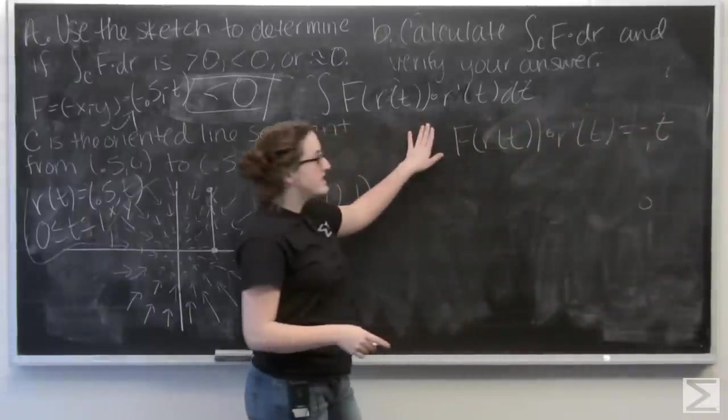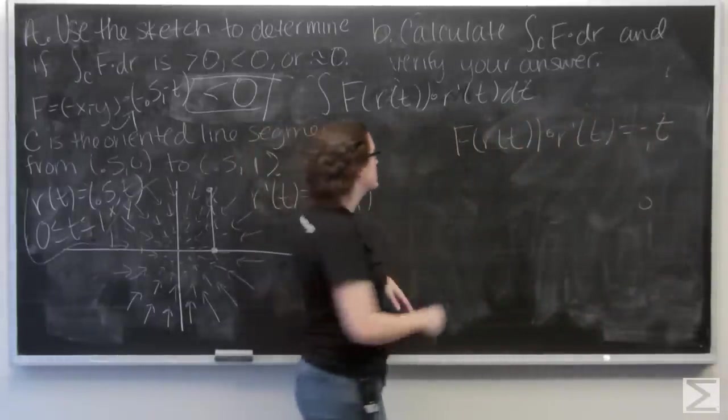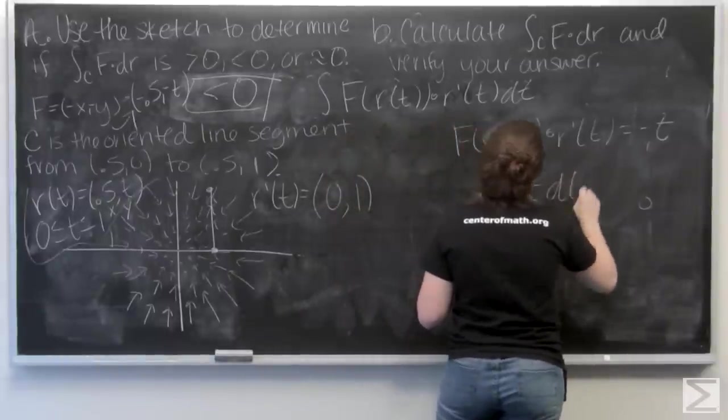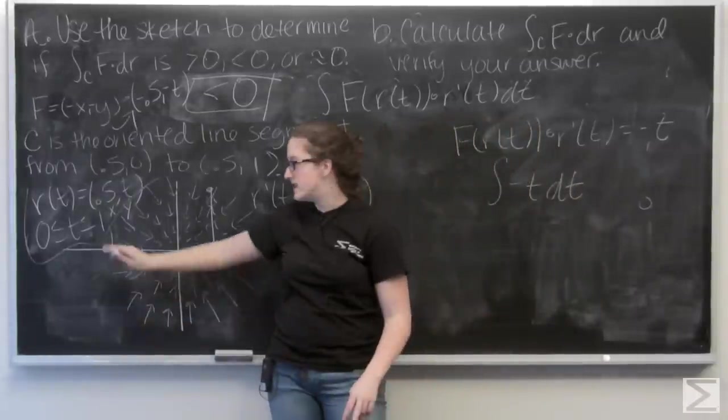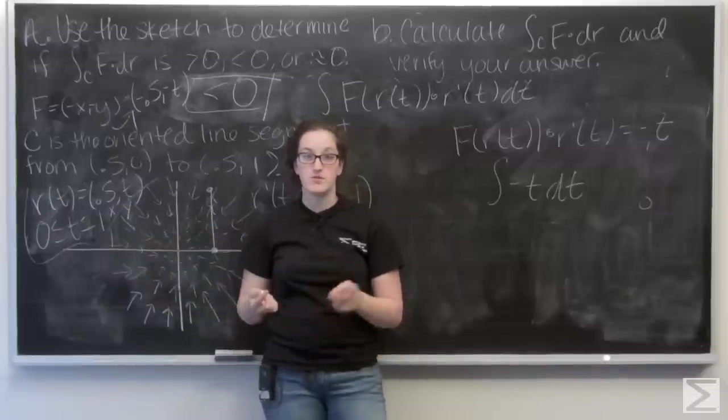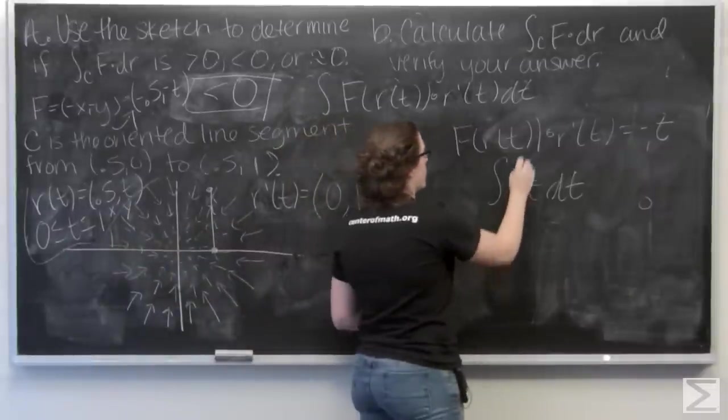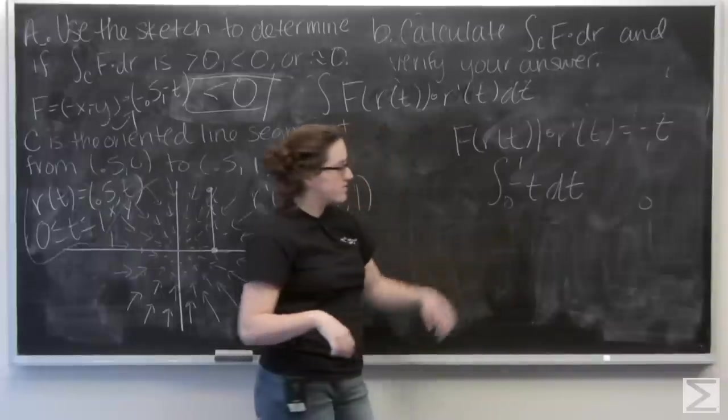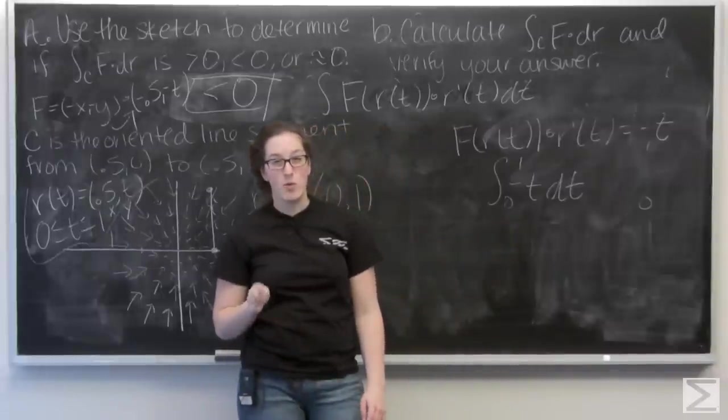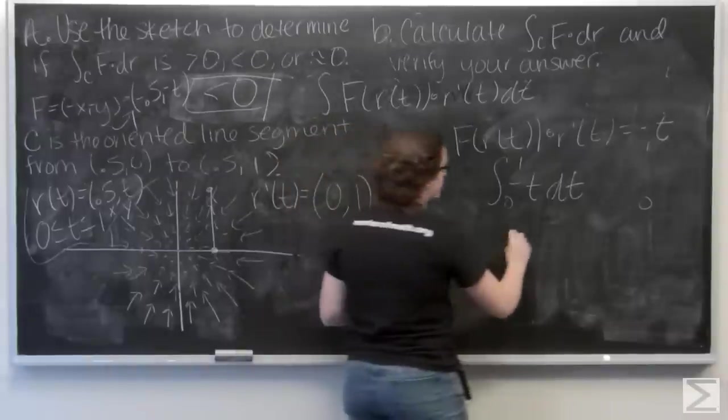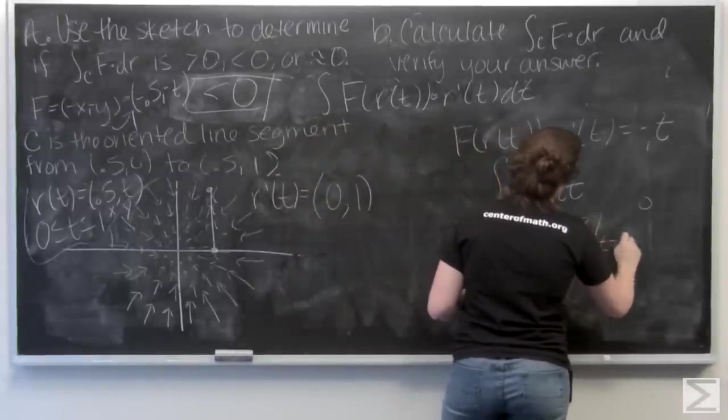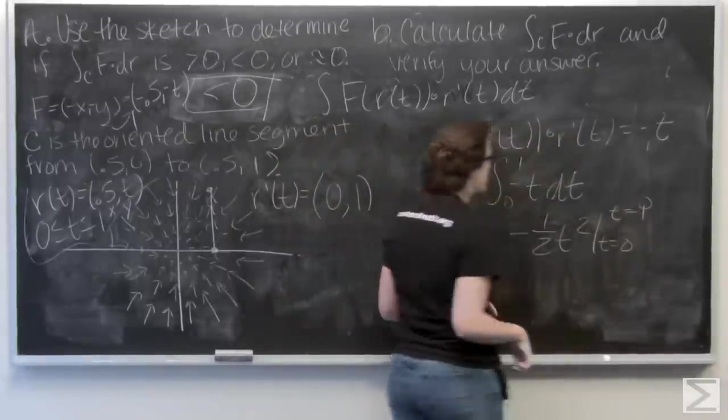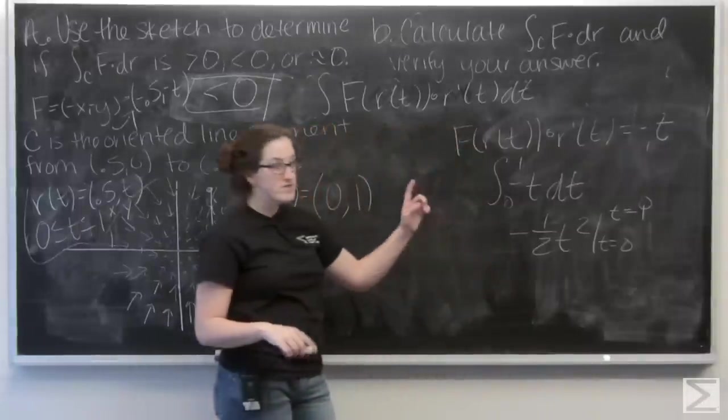And now I want to take the integral of this dot product. And I'm going to use the same bounds of integration as the interval for t, which is 0 to 1. Well, this is pretty easy. The integral of negative t is going to be negative one half t squared. And I'm going to evaluate that from t equals 0 to t equals 1.